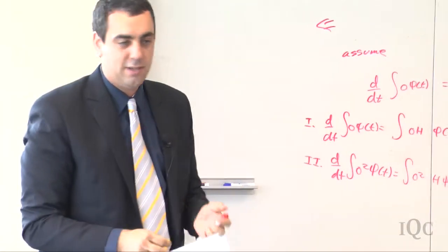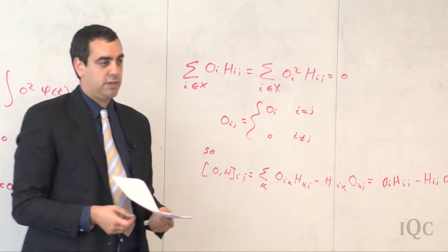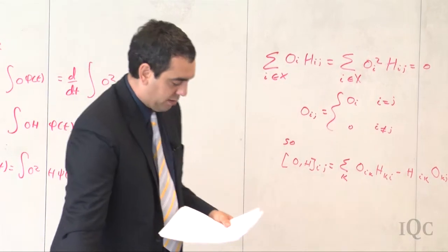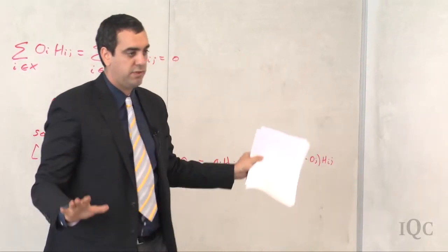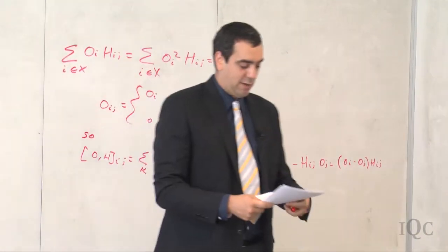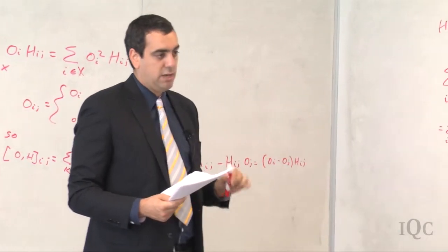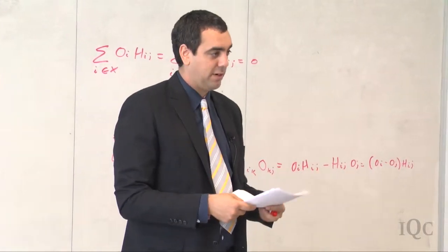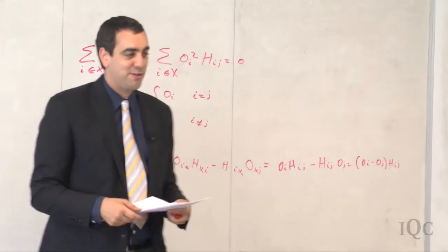That's funky, isn't it? You end up having to insist not only that the observable commutes with the Hamiltonian, but that the square of the observable also commutes with the Hamiltonian. That's really different from quantum physics. In the next 15 minutes I'd like to show the quantum version of Noether's theorem, or at least show you why you need the square. Then we'll conclude the class.